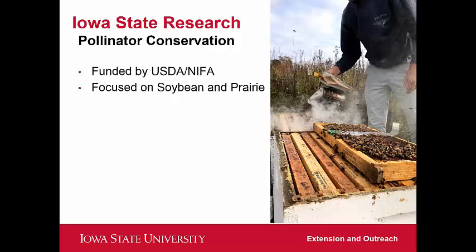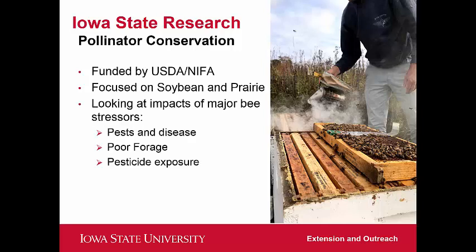We're also looking at prairie systems since prairie was such an important part of Iowa's landscape prior to agricultural production, and because remnant prairies provide a lot of floral resources and are home to many native bee species. The study seeks to look at how Iowa landscapes affect honeybee and native bee health through three primary stressors — we call these the three Ps.